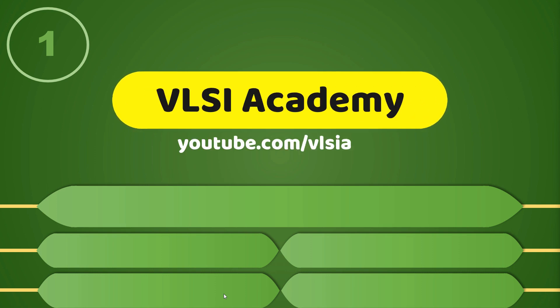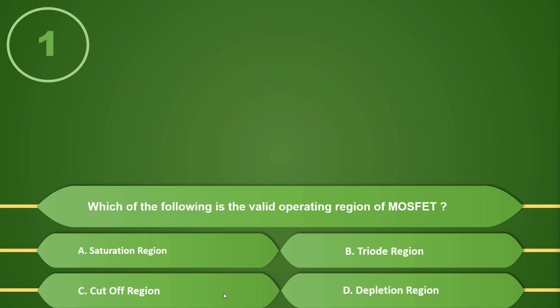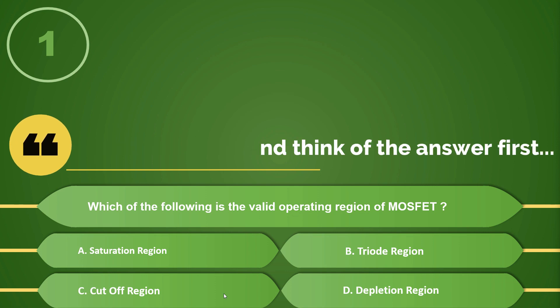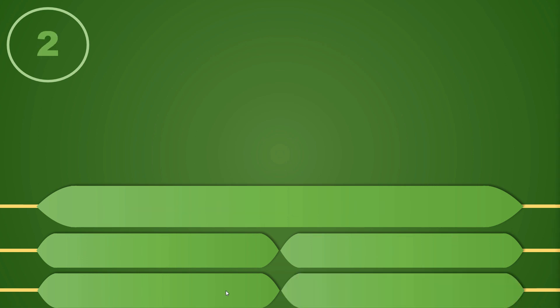Here is your first question: Which of the following is a valid operating region of a MOSFET? Options are: A) Saturation region, B) Triode region, C) Cutoff region, D) Depletion region. You can pause the video and think of the answer. If you answered D, you are correct — the depletion region is a physical region devoid of ions and not an operating region in the MOSFET.